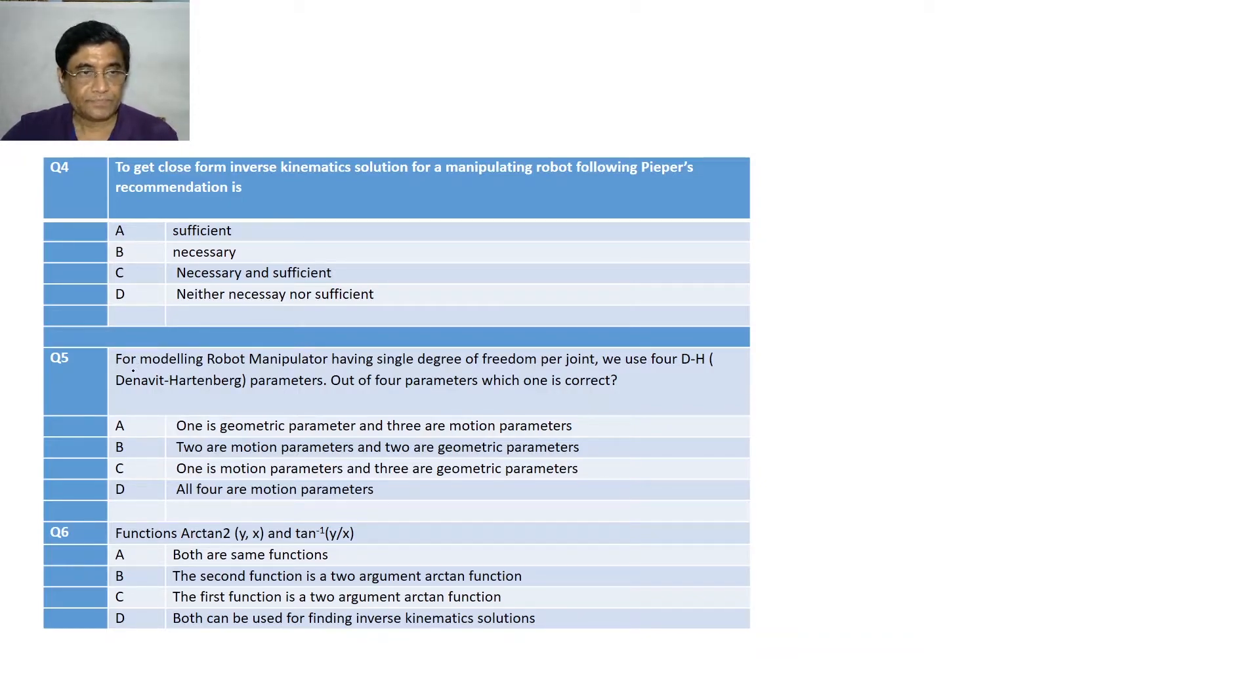Next question. For modeling robot manipulator having a single degree of freedom per joint, we use Denavit-Hartenberg parameters. Out of four parameters, which one is correct? One is geometric parameter and three are motion parameter? Two are motion parameter, two are geometric parameter? One is motion parameter and three are geometric parameters? All four are motion parameters. So, if you have studied my lectures on DH parameters, you know that out of four DH parameters, three are geometric parameter. They never change with motion. Once the robot is designed, that is, the design is given, all those parameters are actually fixed.